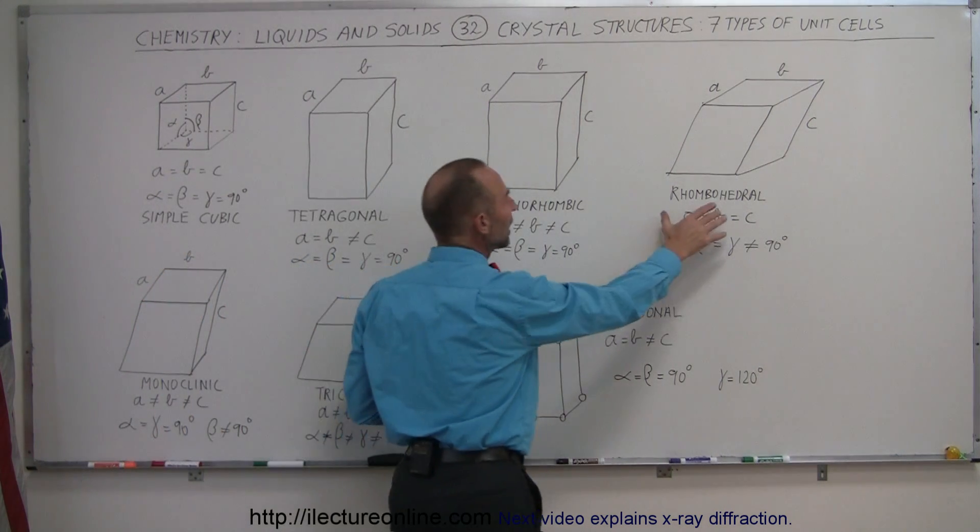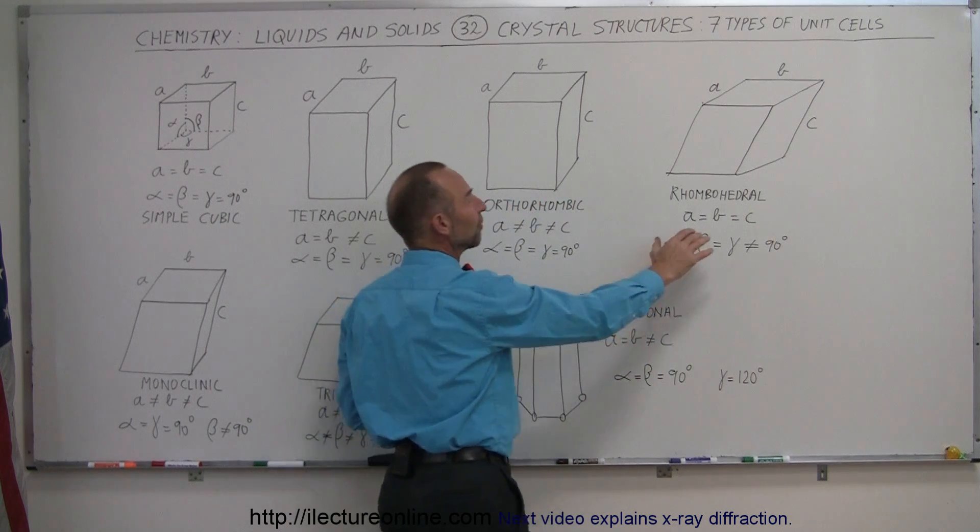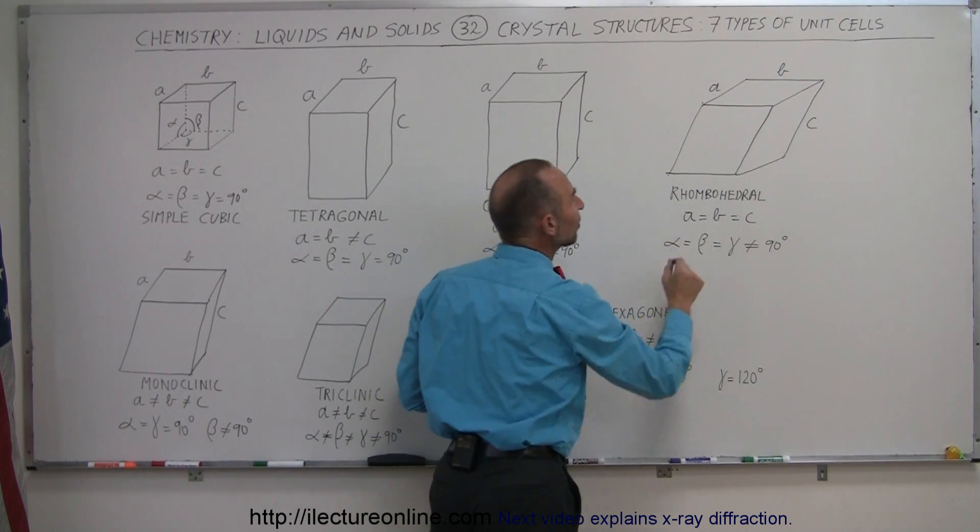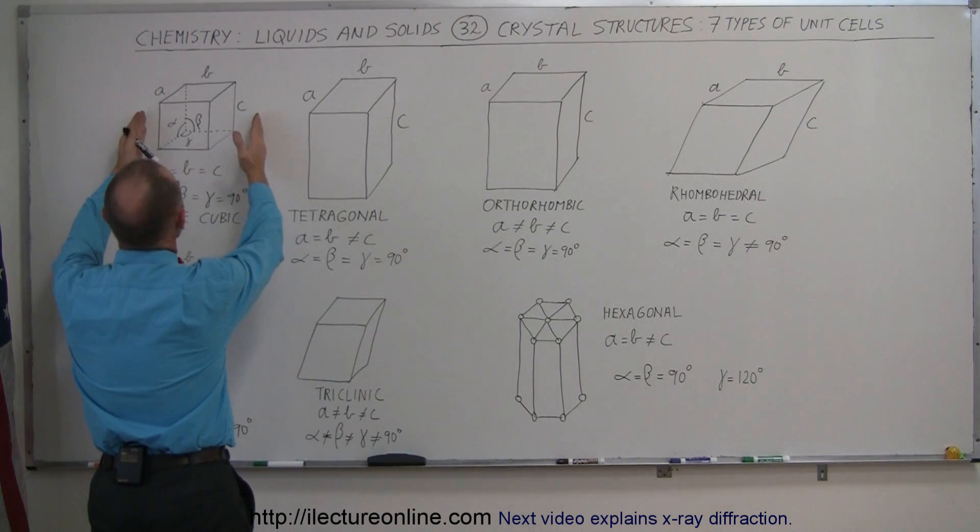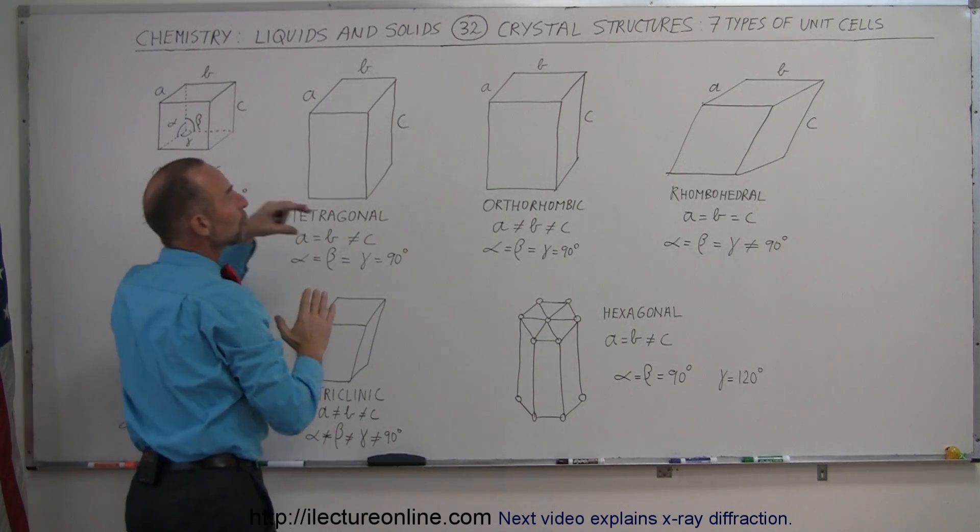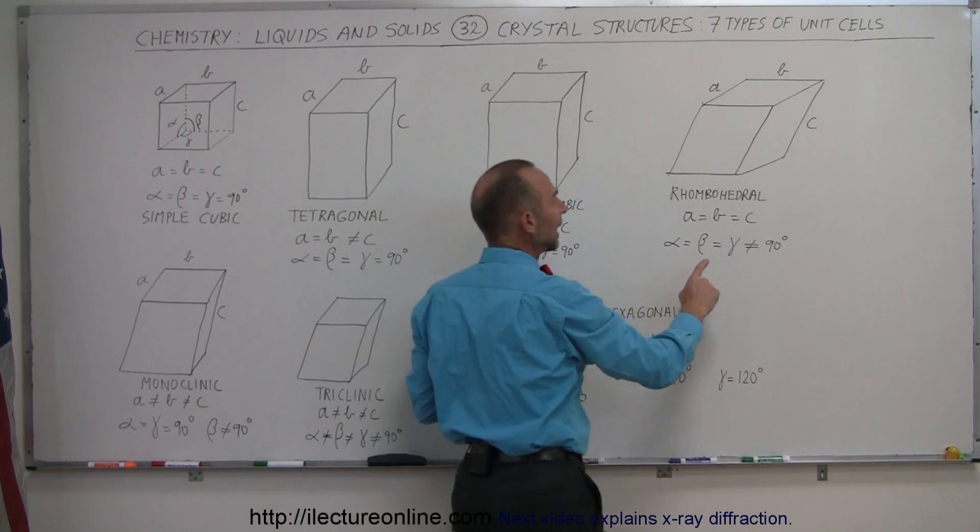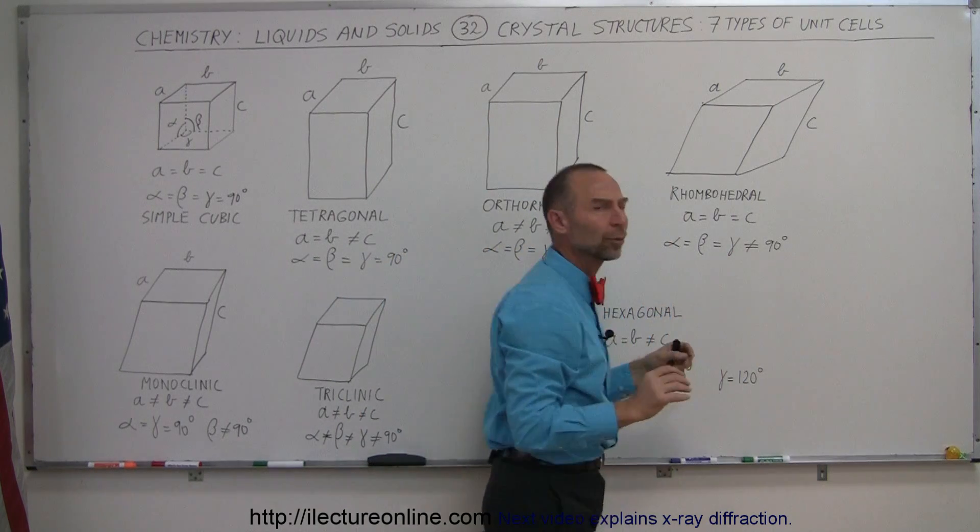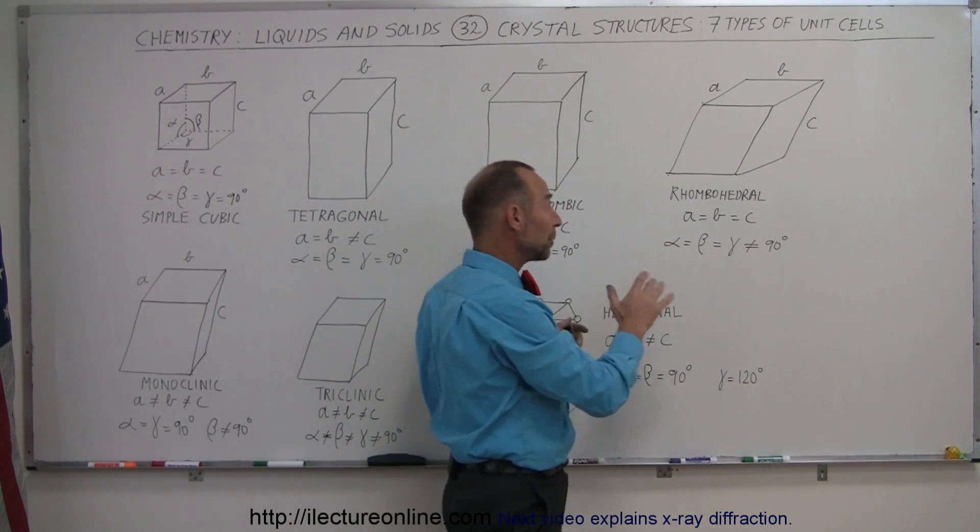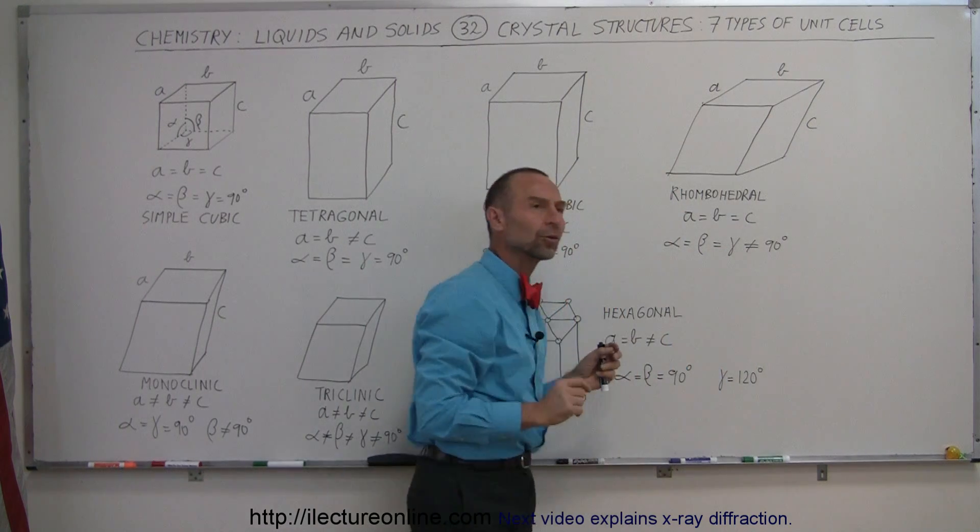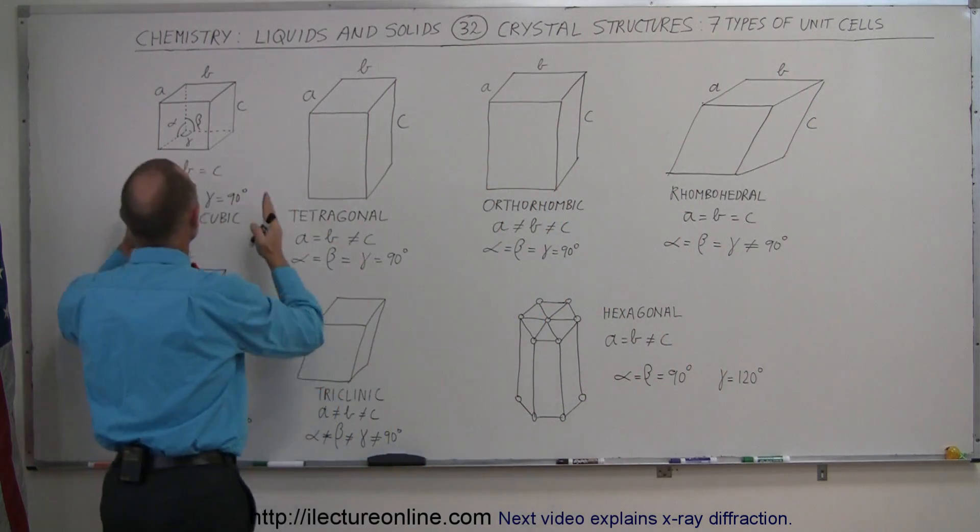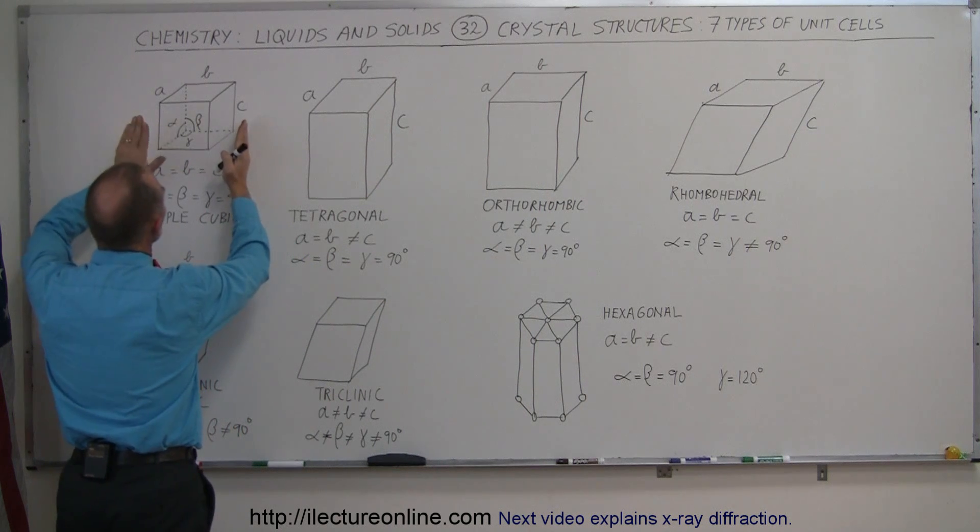The next shape, rhombohedral, you can see that there's still a fair amount of symmetry. A, B, and C is the same, so the sides are still the same. It's basically taking what we have, a cubic structure here that's the same, and it's pushed over in such a way that the angle is no longer equal to 90 degrees. Now the question is which angle?